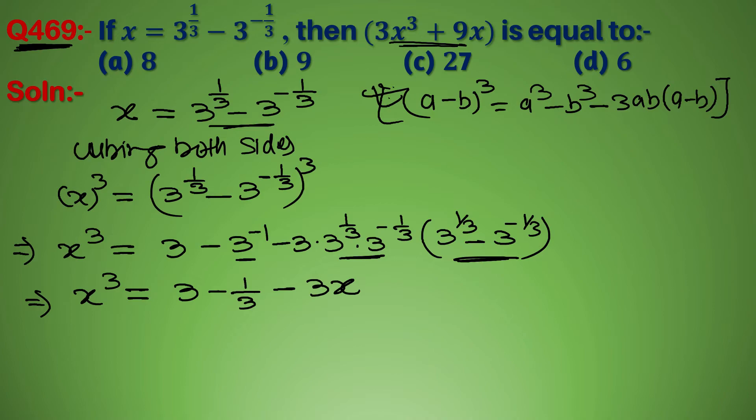और हमें लाना है 3x cube plus 9x की value. तो both side हम 3 से multiply कर देंगे, तो यह होगा 3x cube plus 9 minus 1 minus 9x. और इस 9x को left hand side लाएंगे.